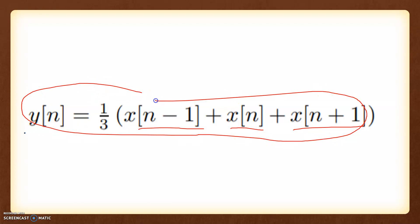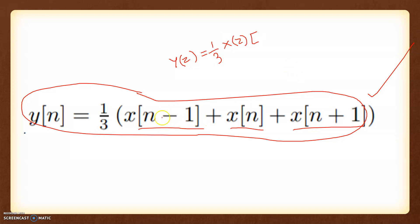Now let me show you the application of this filter and how to implement it in MATLAB. First, we take the Z-transform. In the Z-domain, we can convert this equation: 1/3 into x(z) common — x(n-1) becomes z to the power minus 1, x(n) becomes 1, and x(n+1) becomes z to the power 1.